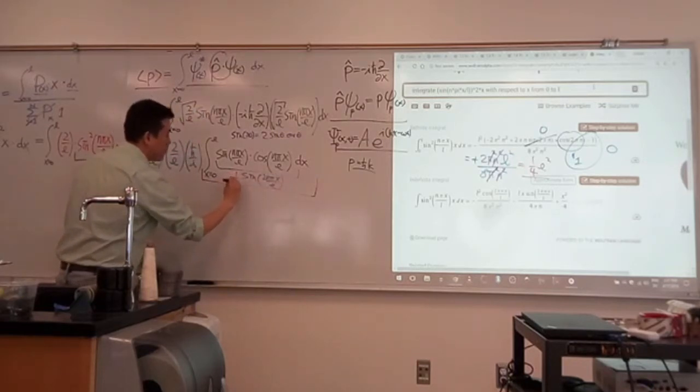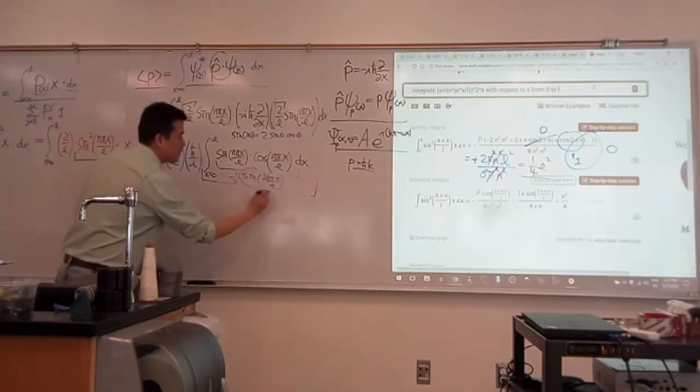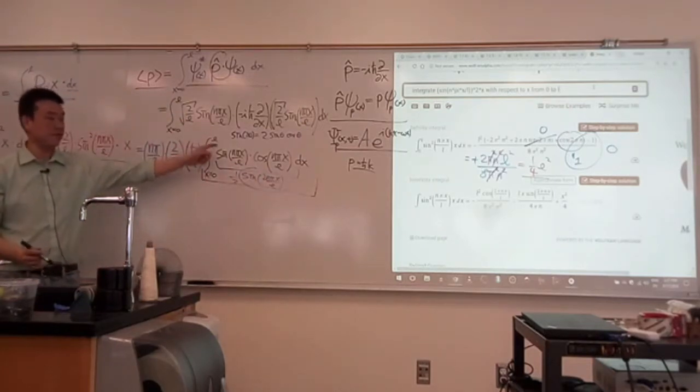So what I can rewrite this as is sine of 2n pi x over L, I guess, divide by one half, or multiply by one half. What is integral of this from x equals 0 to L?